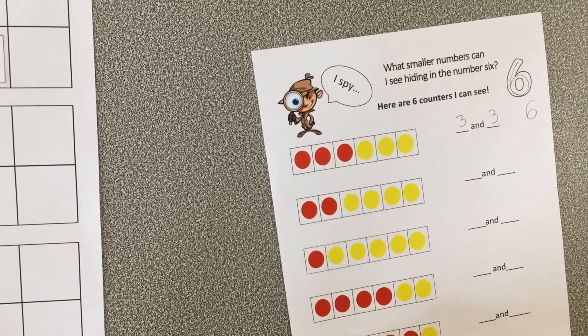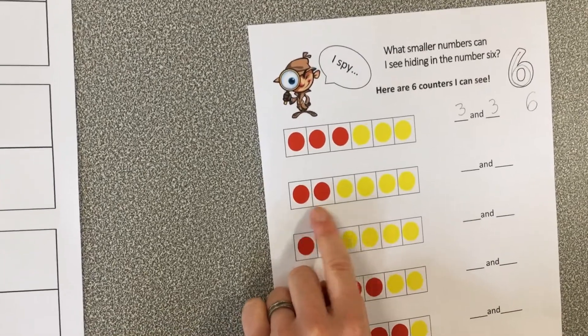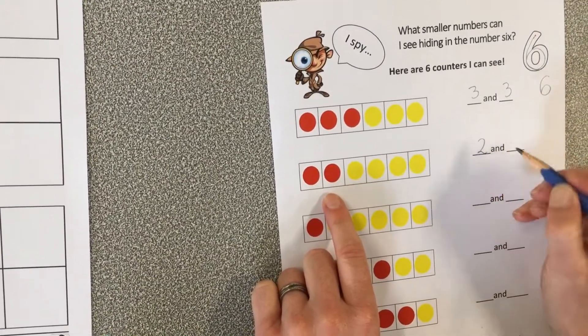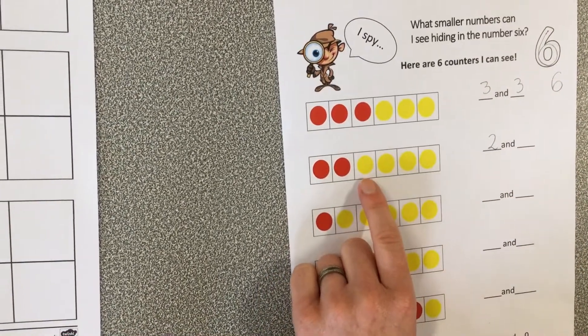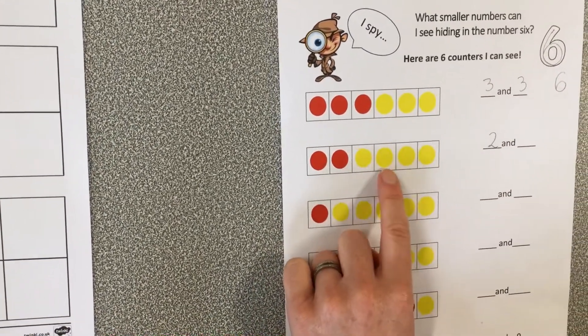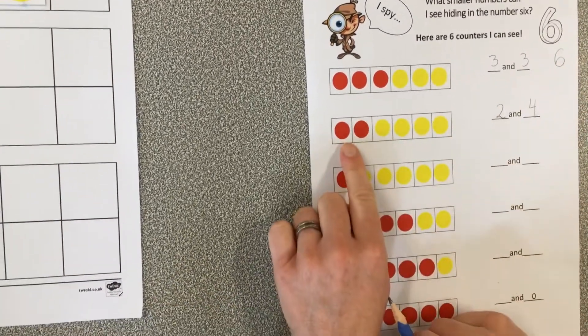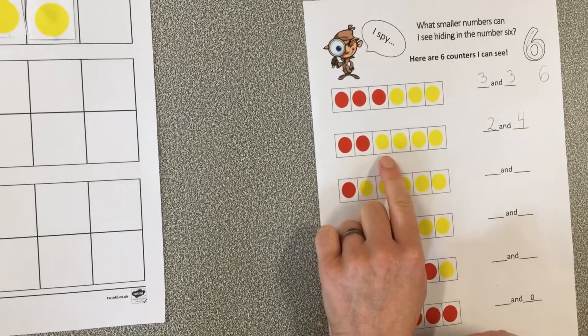Let's do the next one together too. Well, it's nice and easy to subitize the red ones, isn't it? They stand out. It's a group of two. And we might have to count this in the yellow. One, two, three, four. A group of four. So we had a red group of two and a yellow group of four.